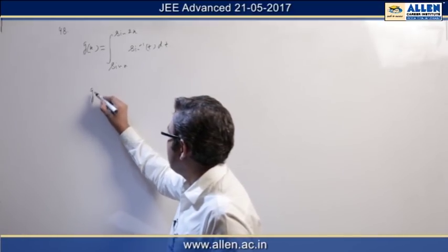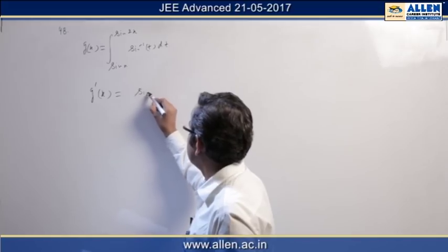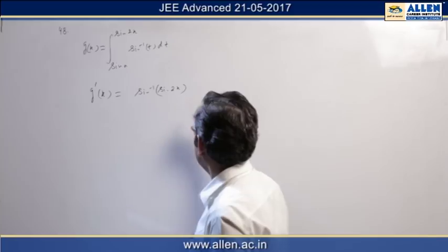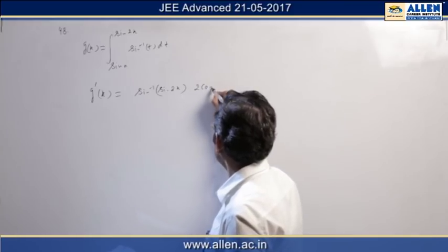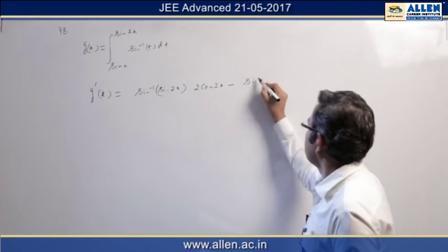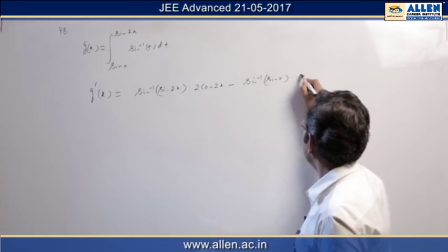So let us apply the Newton-Leibniz formula, which gives g'(x) equal to sin inverse(sin 2x) times 2 times cos(2x) minus sin inverse(sin x) times cos(x).